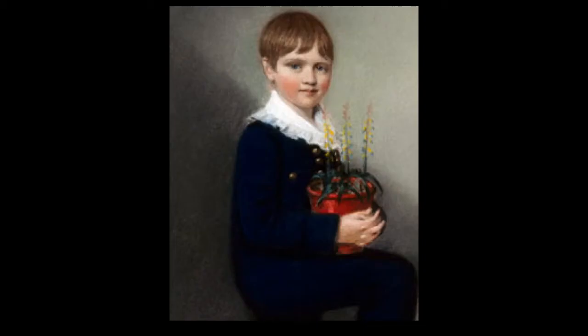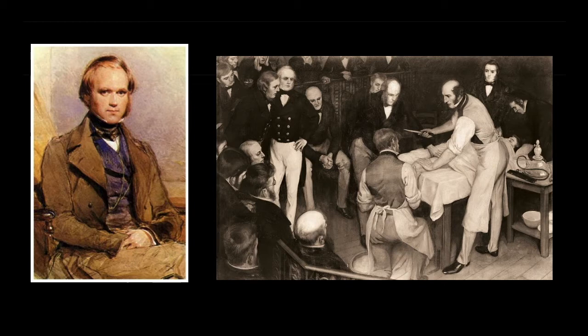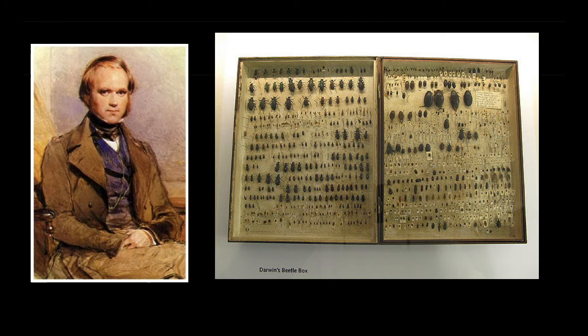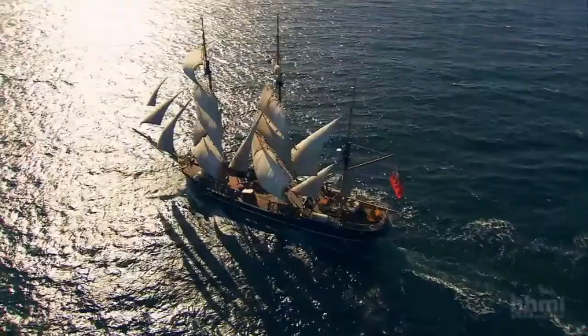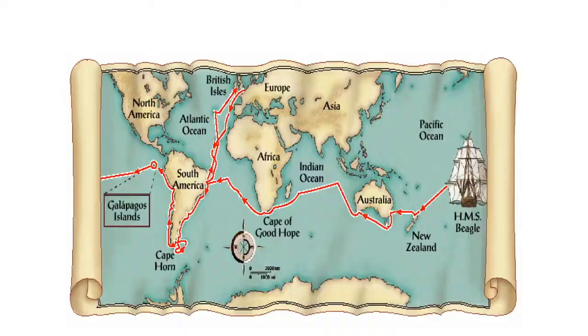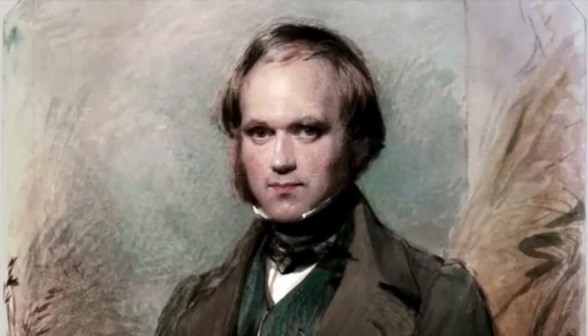Charles Darwin had a privileged childhood and a passion for nature and collecting. He originally wanted to become a physician, but hated the sight of blood, so he quit medical school and went to Cambridge to study for the clergy — but instead spent most of his time collecting beetles and in discussions with naturalist John Henslow. It was Henslow who arranged for Darwin to join an expedition on the HMS Beagle as a naturalist and companion to the captain. This five-year expedition to chart the South American coastline is now one of the most famous expeditions in biology. Darwin was only 22 years old when he set sail.